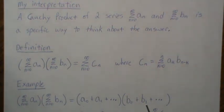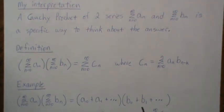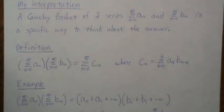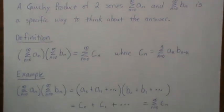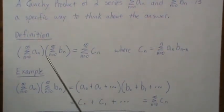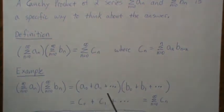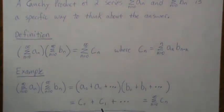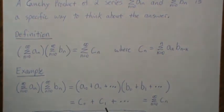To do this product, you take this times each one of these terms, take the next one times each one of these terms, take the next one times each, and that's how you multiply these series together. But according to the Cauchy definition, this can be represented by c₀, c₁, c₂, c₃, etc., and then generically that's written as just the sum of the cₙs.